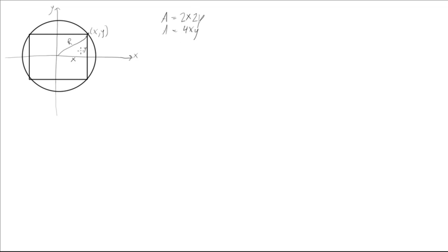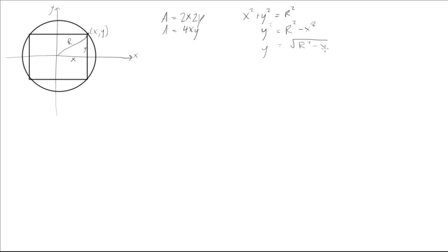We need to connect the circle to the square. We'll use Pythagoras to connect x, y, and r: x squared plus y squared equals r squared. We want to get rid of one variable, so we put y in terms of x and r. Rearranging gives y squared equals r squared minus x squared, so y equals the square root of r squared minus x squared.